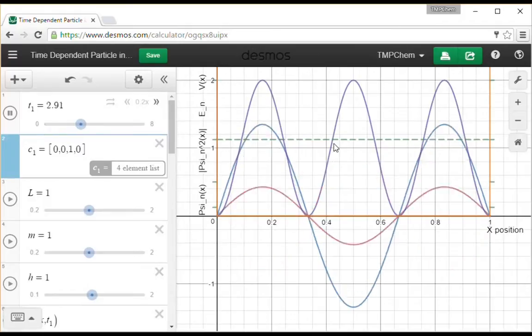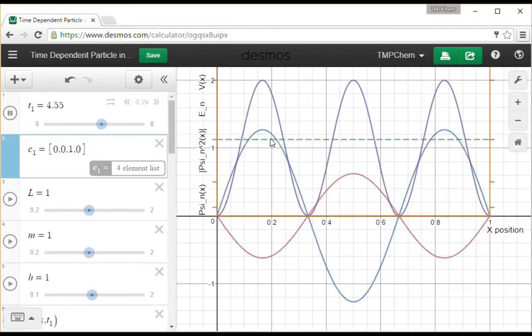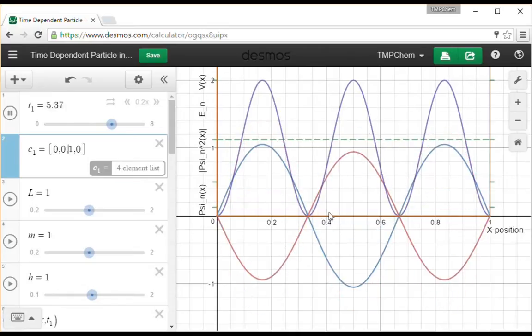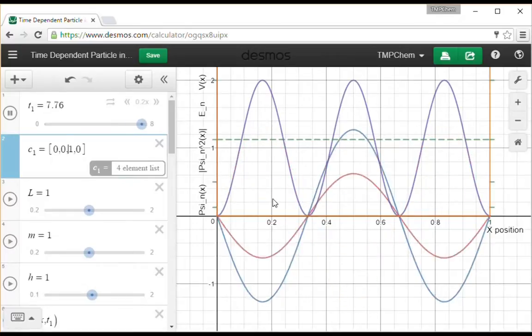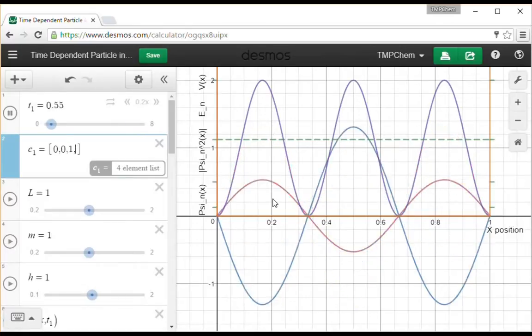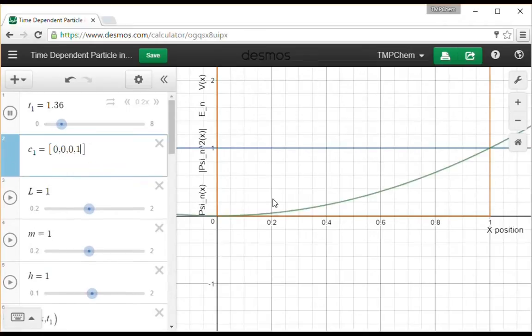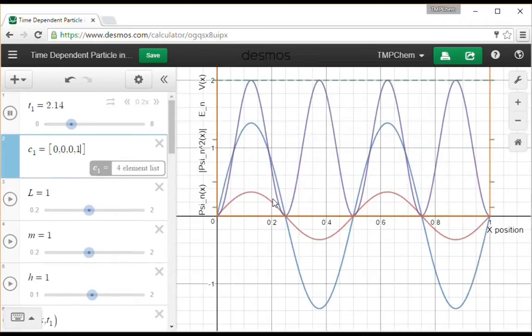n equals 3 starts to make the pattern pretty apparent. We're going up to n equals e3 for energy. Three lumps of density, two nodes, and we're going much faster oscillating between real and imaginary components. So those are individual stationary states all the way up to n equals 4.